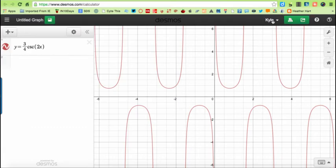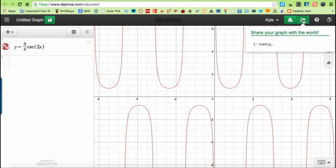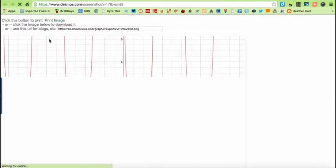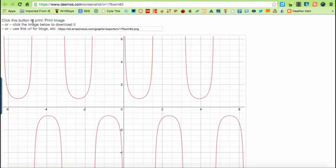So now that I am logged in, I can click on this right arrow that says share graph. You could either send a link, but I'd prefer the image, so click on the image. And up in the top left, it'll say click this button to print, or click the image below to download it. So I'm going to click to download it.